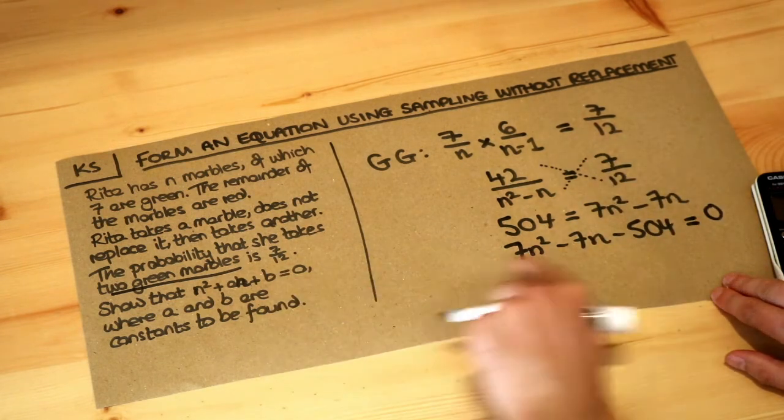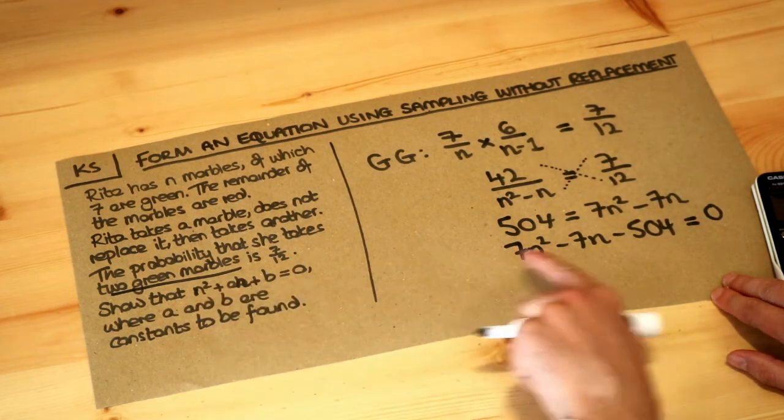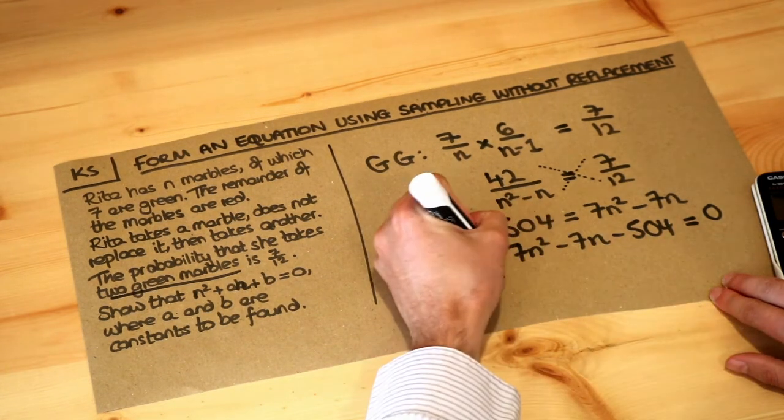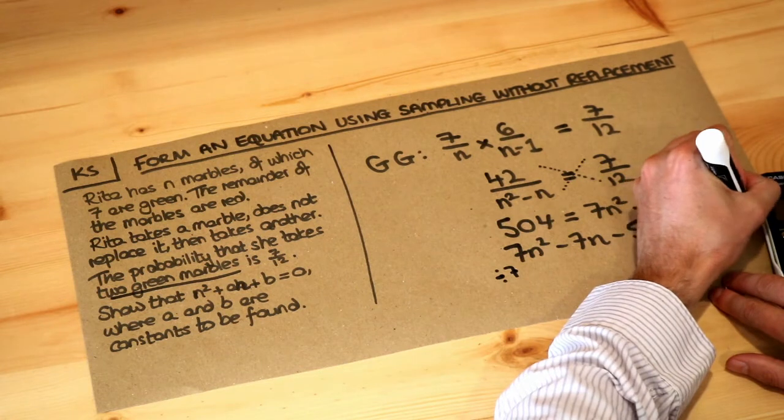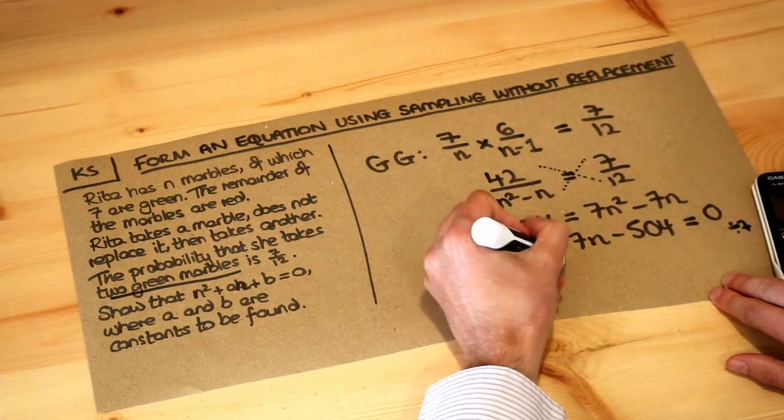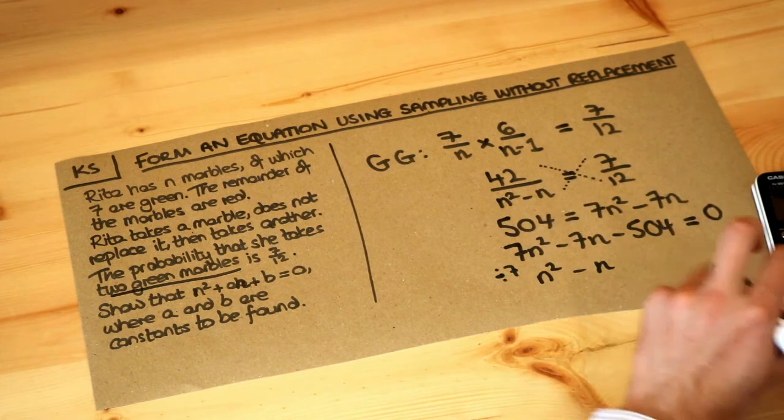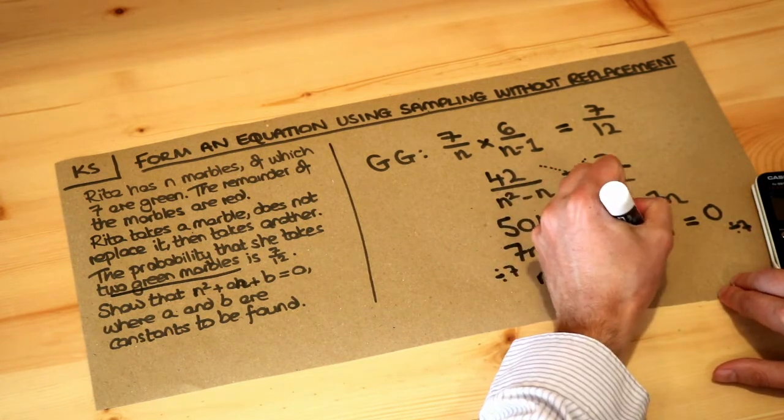And then we're almost there. We've got a number in front of n squared, but we don't here. Now, fortunately, everything here divides by 7. So if we divide both sides of the equation by 7, that becomes n squared, that becomes minus n, and then 504 divided by 7 is 72. It's minus 72 equals 0.